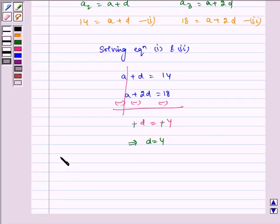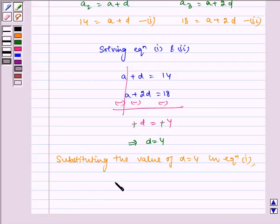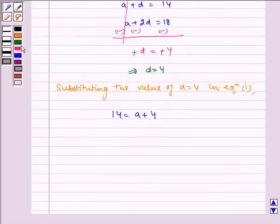Now, substituting the value of D is equal to 4 in equation 1 we get 14 is equal to A plus 4, which implies A is equal to 14 minus 4, which implies A is equal to 10.